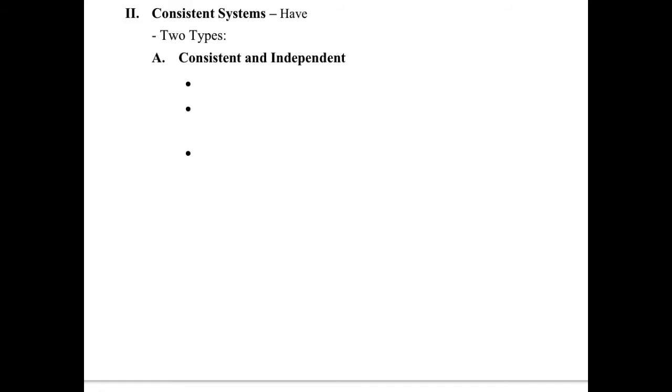The first type is going to be this consistent and independent. That's what we've been doing for a long time. So exactly one solution, or I'll just say one solution. In other words, these two lines are only going to cross in one spot, or those two equations only have one XY pair that fits both equations. But one solution, it's going to be that point right there where they cross.